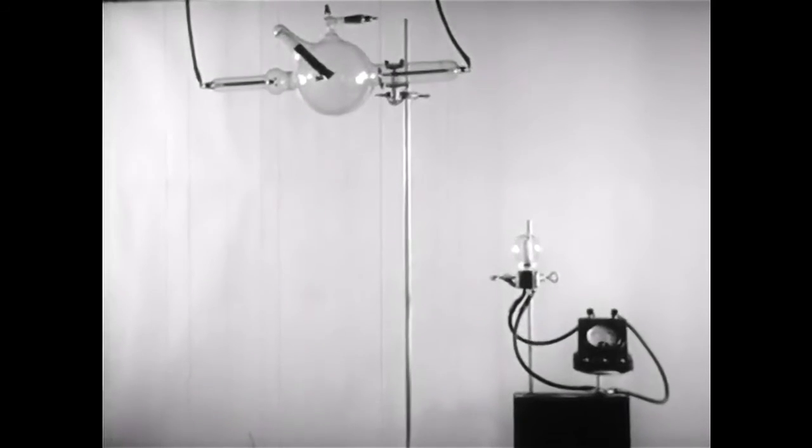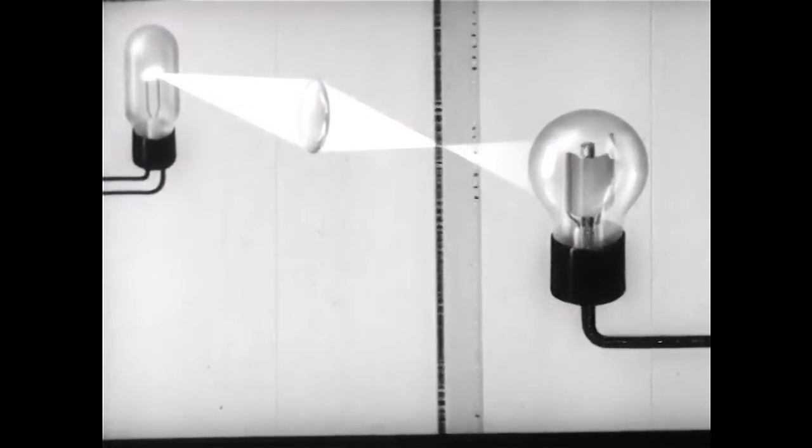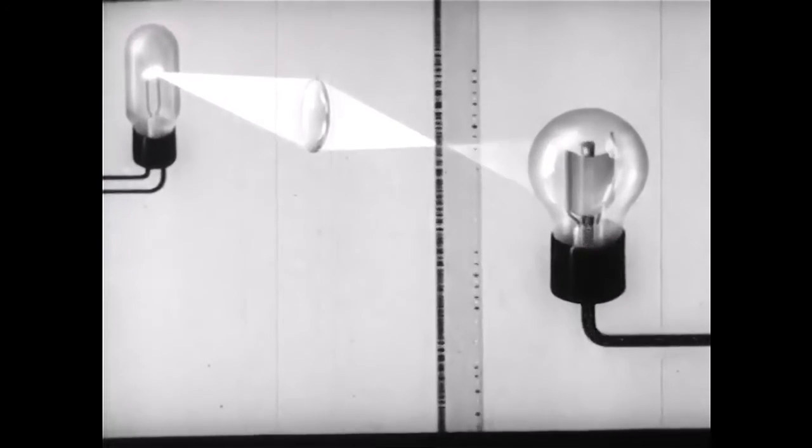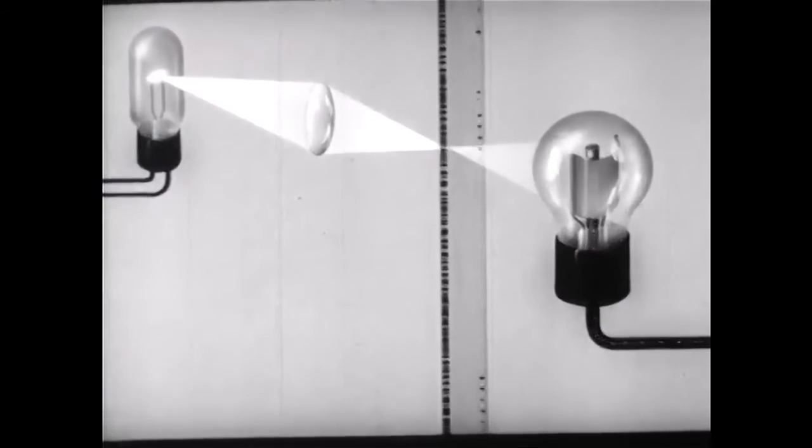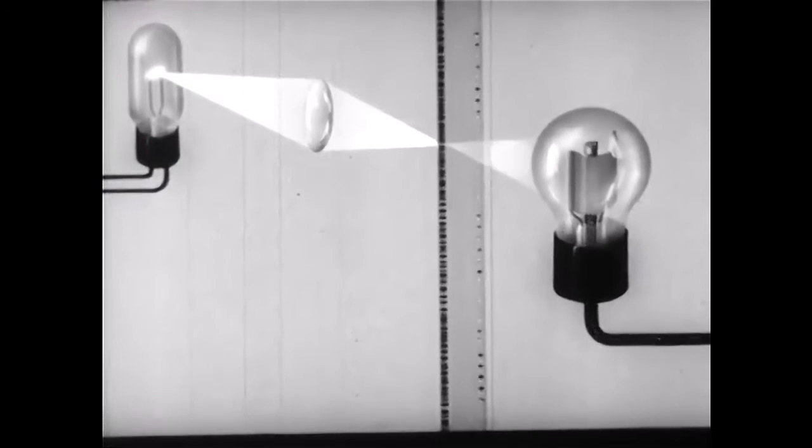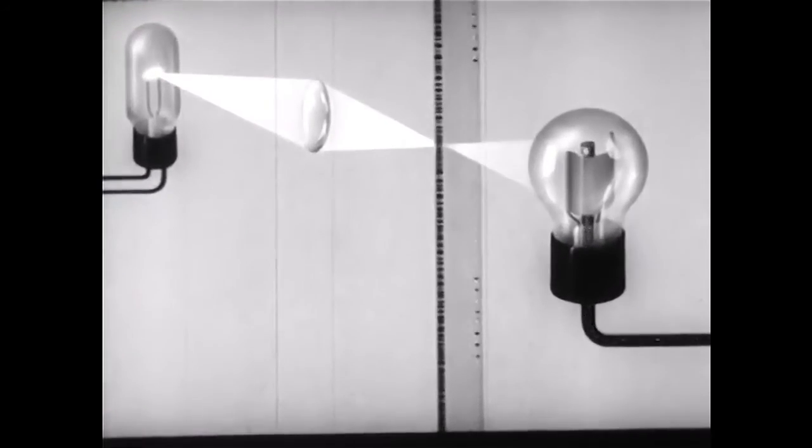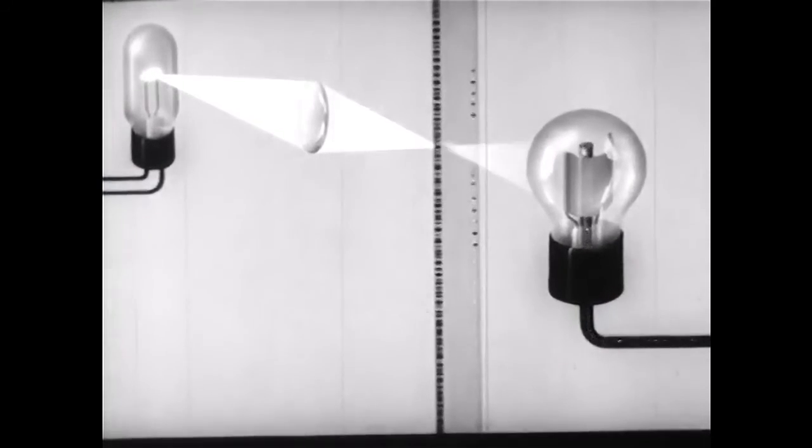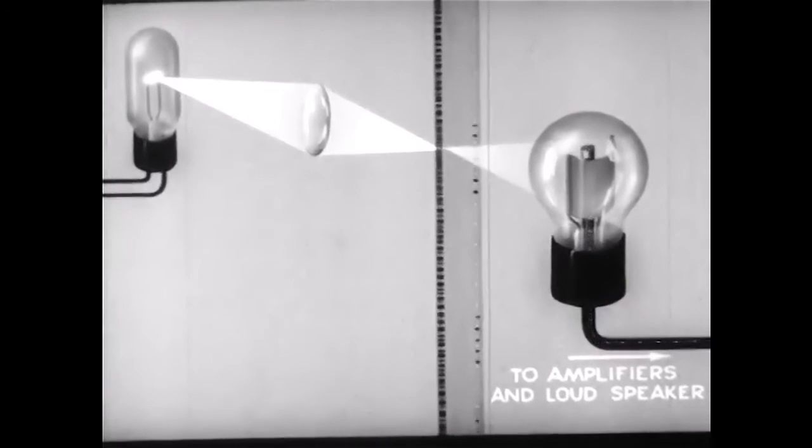This phenomenon is used in the photoelectric cell. Such cells are adapted for soundtrack on film by using ordinary light with the more active metals like potassium or cesium. The varying opaqueness of the soundtrack changes the amount of light reaching the photoelectric cell in the projector. The cell, therefore, delivers a varying current, which is amplified by vacuum tubes and then translated into sound.